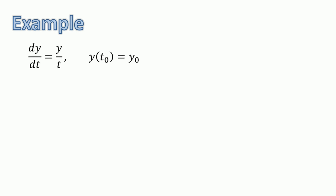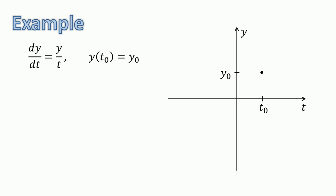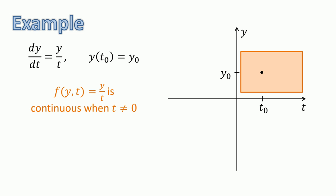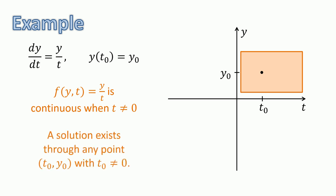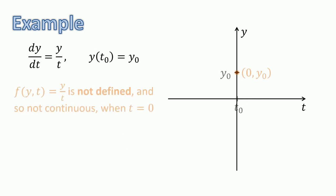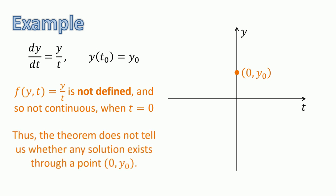Let's look at an example: dy/dt equals y divided by t. For any point (t0, y0) with t0 not equal to 0, the function f(t, y) equals y divided by t is continuous in a rectangle containing (t0, y0). Thus, the existence theorem tells us that a solution exists through the point (t0, y0). However, f(t, y) equals y over t is not continuous at points of the form (0, y0) — it's not even defined when t equals 0 — and thus the theorem doesn't tell us whether any solution goes through these points.